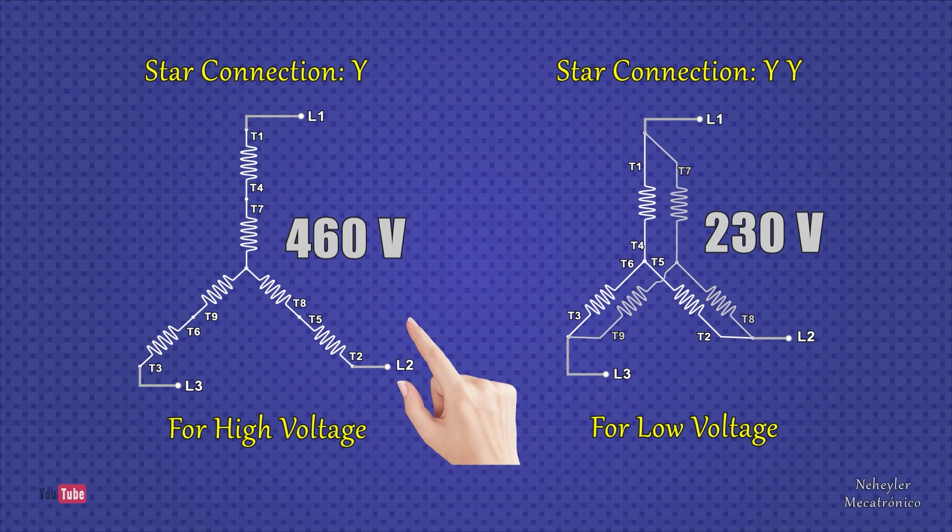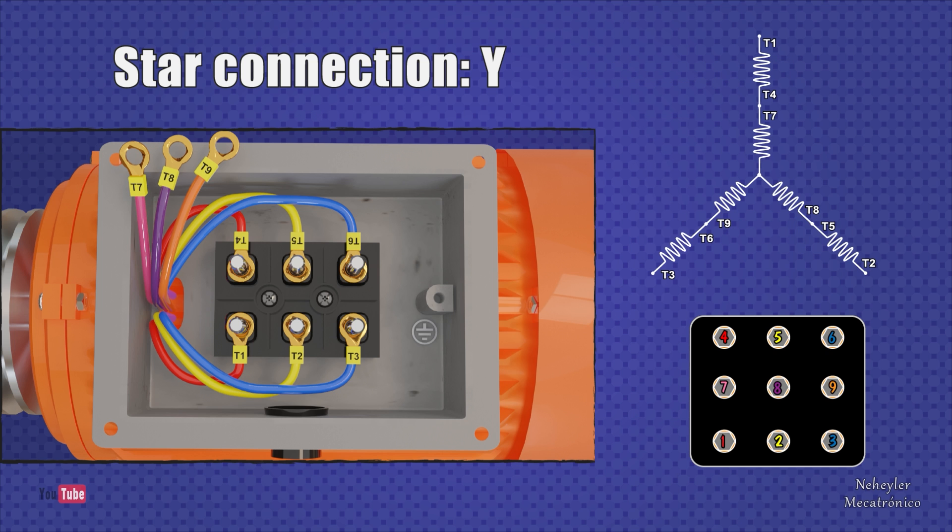Let's look at the connection of series star terminals for high voltage. I am considering colors in the cables to know which winding they correspond to. For example, Terminal 1 and Terminal 4 correspond to the same coil, which is why they have the same color.